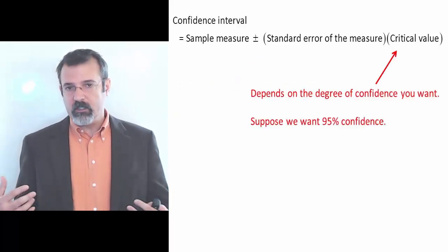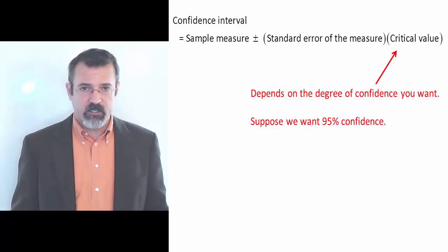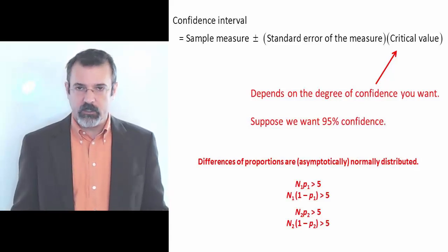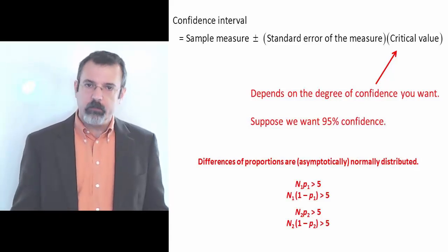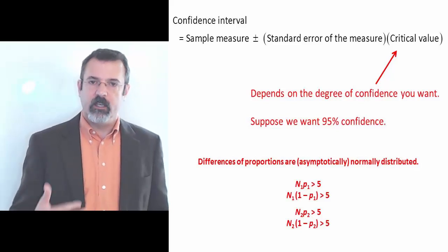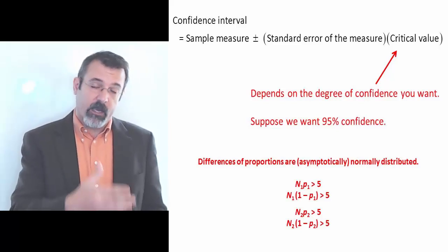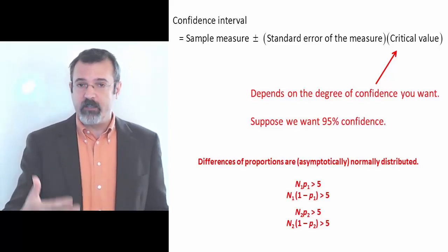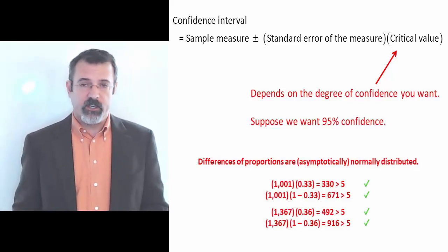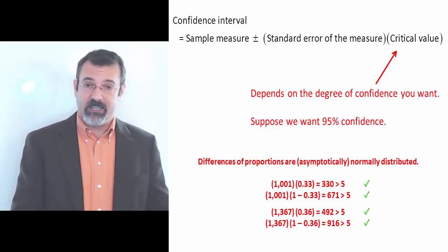The critical value depends on the degree of confidence we want. Suppose we want to make a 95% confidence statement. Differences in proportions are asymptotically normally distributed. That is, they're normally distributed provided that you satisfy these four requirements: that the number of observations multiplied by the proportion and the number of observations multiplied by 1 minus the proportion is greater than 5 for each of your two samples. In this case, we satisfy all four criteria. If you don't satisfy the criteria, then you need to go collect more data.